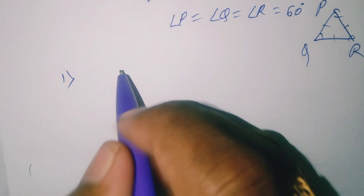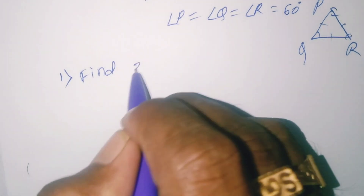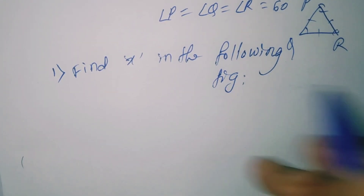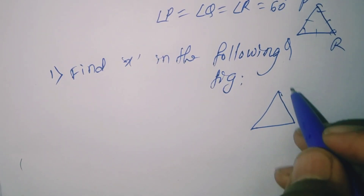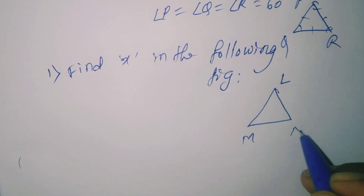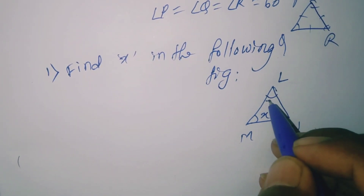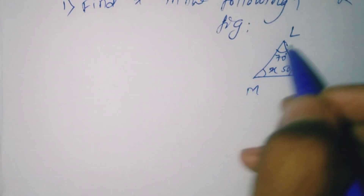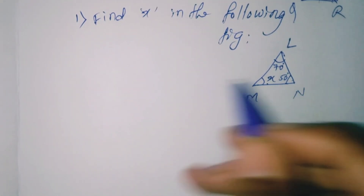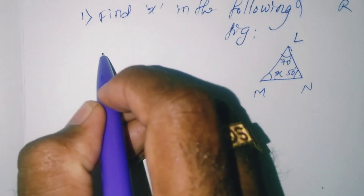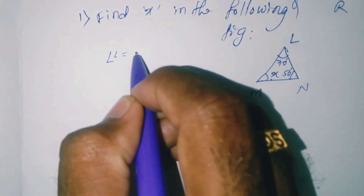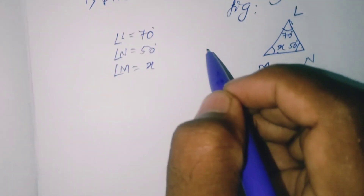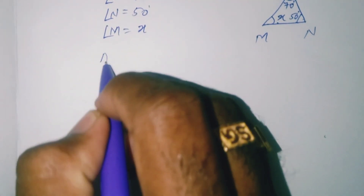Example 1: Find x in the following figure. The triangle is LMN. Angle L is 70 degrees, angle N is 50 degrees, and angle M is x. Two angles are given and we need to find the third angle. We will apply the angle sum property.